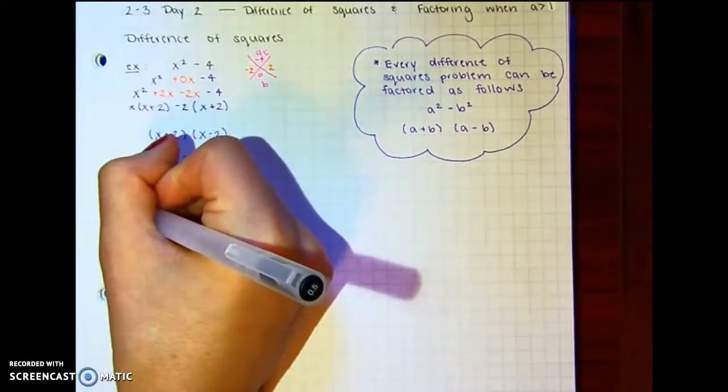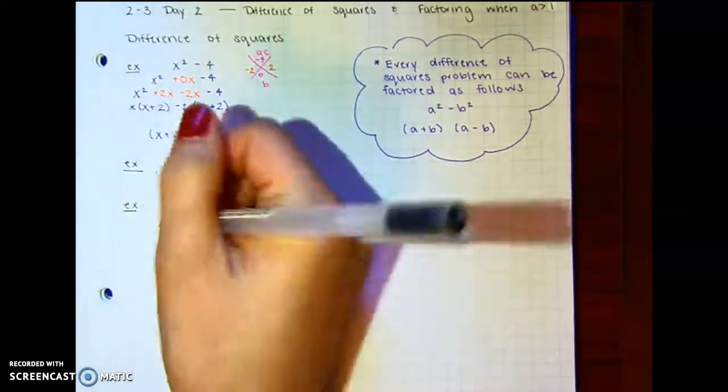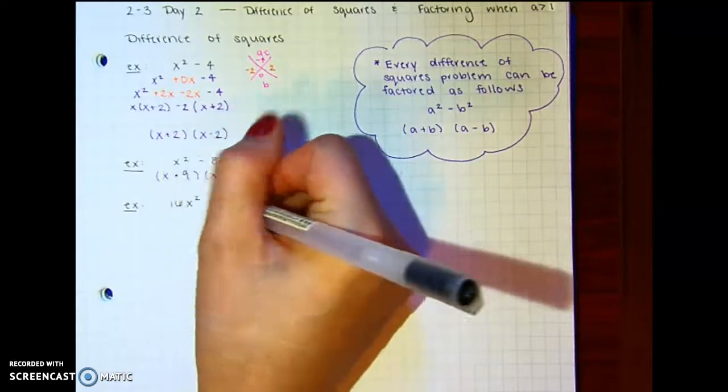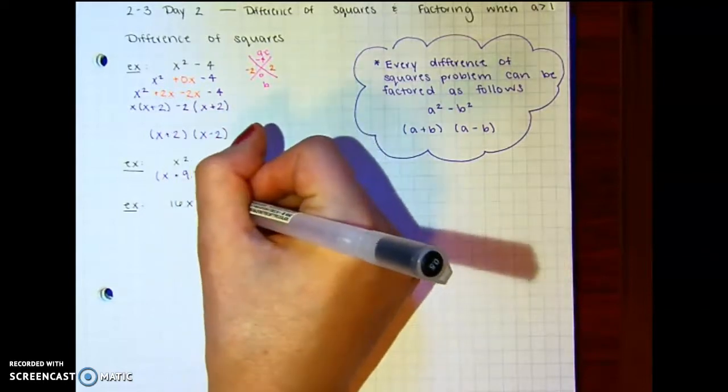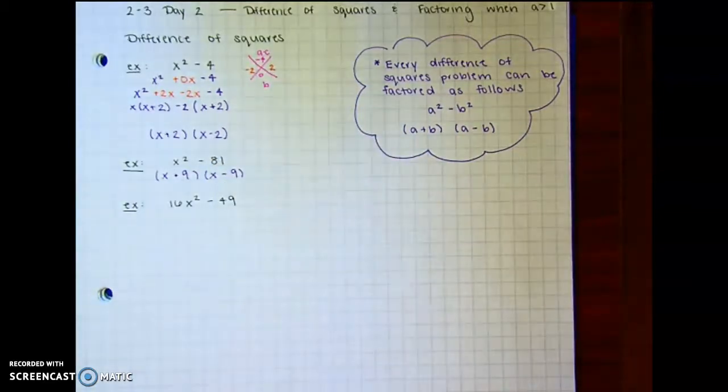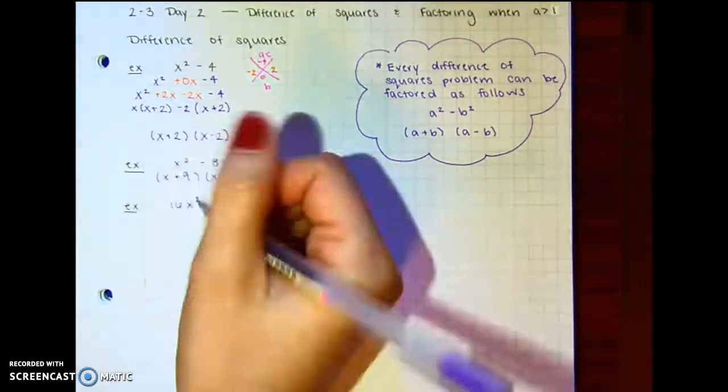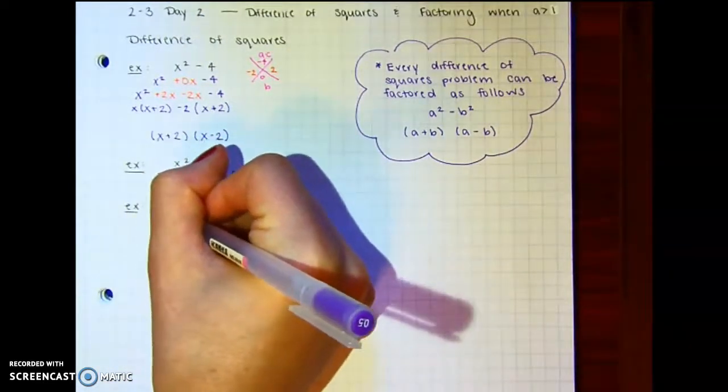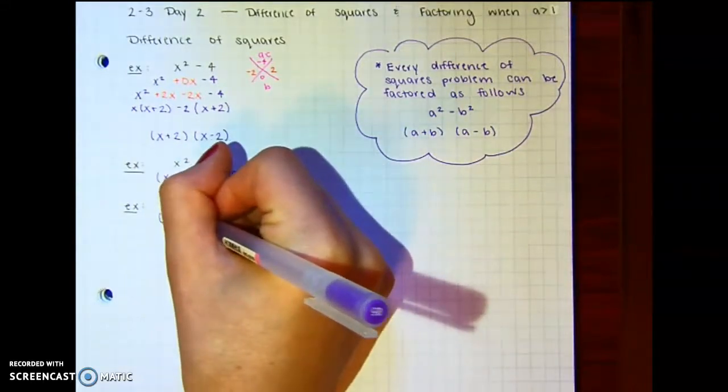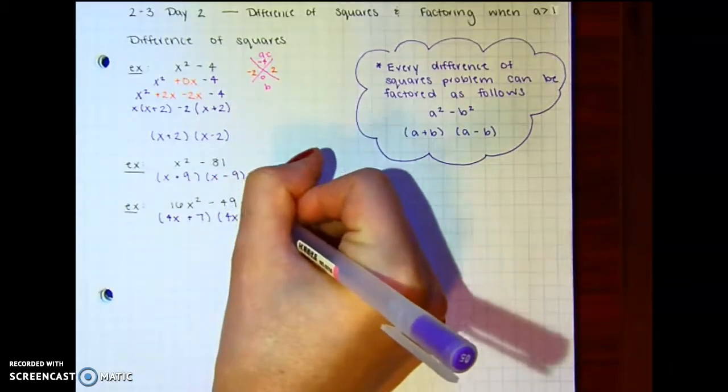And it also works if your first term has a coefficient that's a perfect square. So let's say I had 16x squared minus 49. Okay, so everything here is a perfect square, and it's the difference. So the square root of 16 is 4. The square root of x is x. The square root of 49 is 7. So it'll be 4x plus 7 times 4x minus 7.